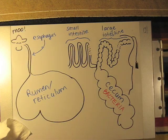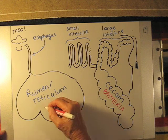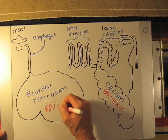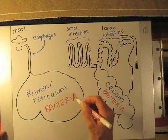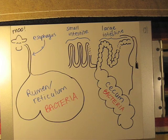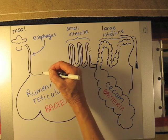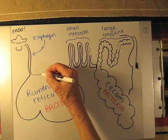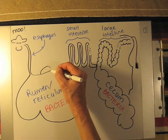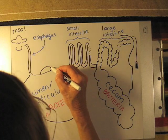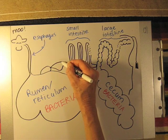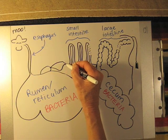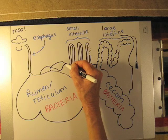In the rumen and reticulum, we have bacteria and other beneficial microorganisms that are digesting fiber, which means that ruminant animals have two places inside the gastrointestinal tract where fiber is digested. When material leaves here, it goes to the omasum, located on the right side of the animal, and then the fourth stomach compartment is the abomasum.